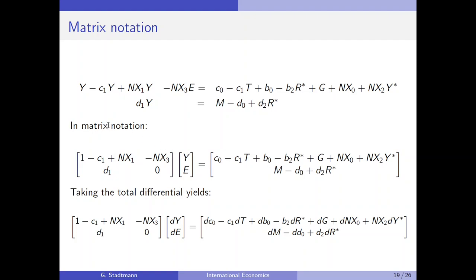All exogenous variables are collected in the solution vector. We have the coefficient matrix in the first position, then the vector of the two unknowns, and the solution vector on the right. We now take the total differential. It is very important to know what letters symbolize a parameter versus a variable — we write a D in front of variables only, since parameters are constant and their changes equal zero.